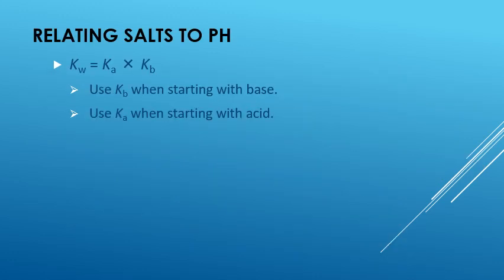We can do calculations to find the pH of a salt solution. The key concept is that Kw equals Ka times Kb. If you have a basic salt, you use Kb; if you have an acidic salt, you use Ka. Let's use a simple reaction to show how this all relates together.